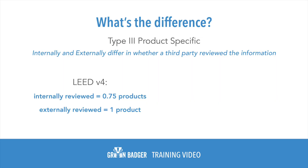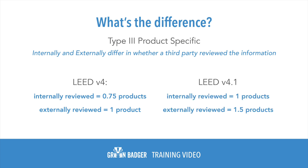For version 4, internally reviewed are worth three-quarters of a product, and externally reviewed are worth one product. For version 4.1, it is one product for internally reviewed and 1.5 products for externally reviewed.